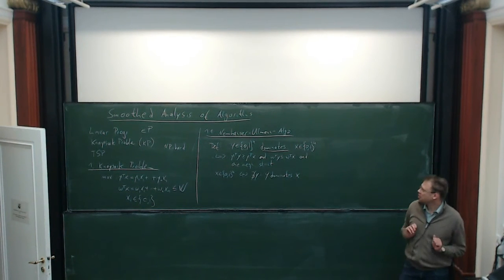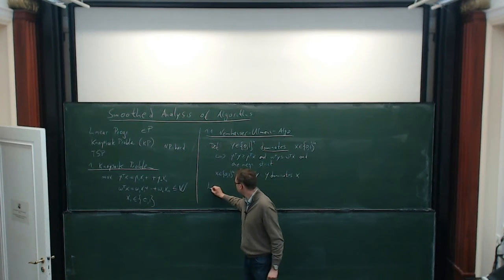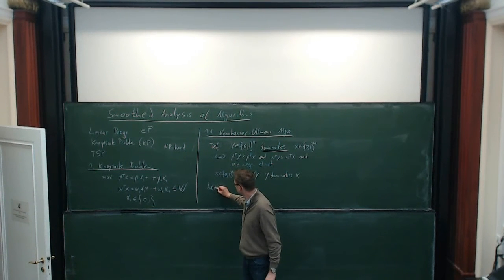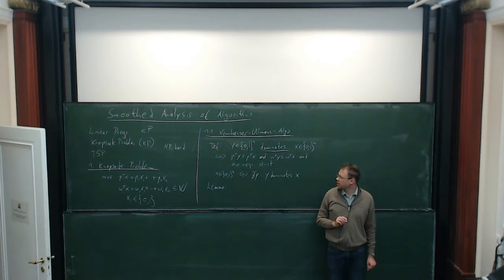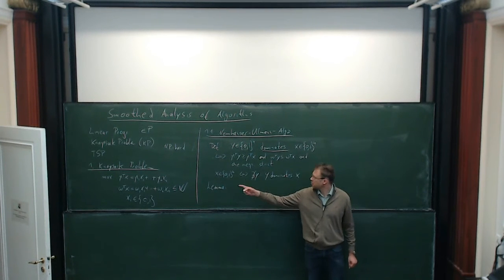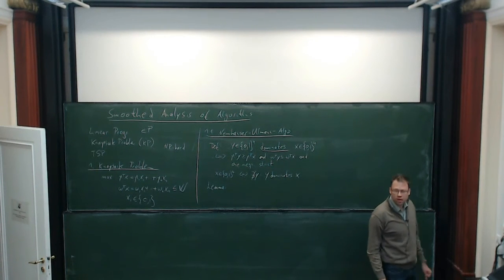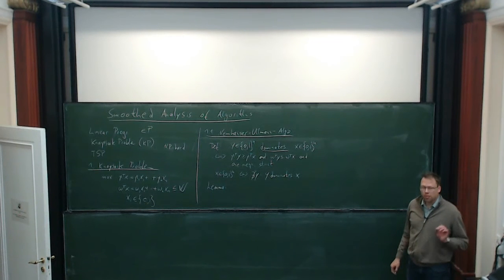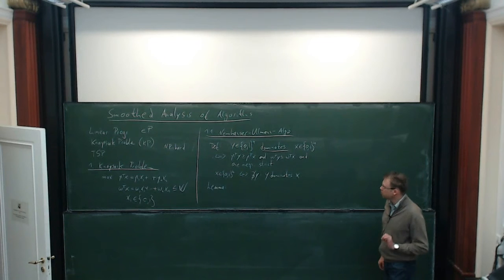The crucial lemma for the correctness of the algorithm is the following: when I want to find an optimal solution for the knapsack problem, it suffices to look only at the Pareto optimal solutions. Or to put it differently, there always exists an optimal solution that is also Pareto optimal.